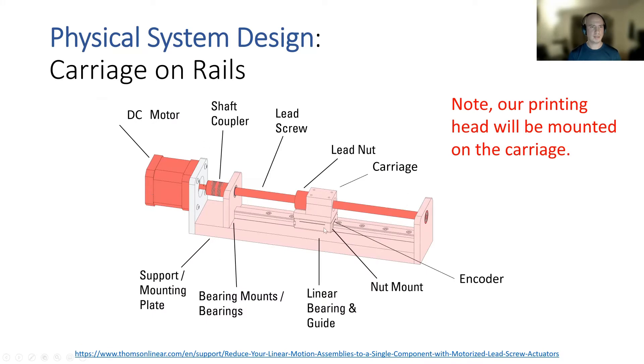Taking a closer look at the lead screw assembly, we have our DC motor at the terminal end that is coupled to the lead screw. As the motor turns, it advances the carriage which has the printing head mounted to it. Also mounted to the carriage, we have an encoder which is essentially going to be acting as our position sensor.